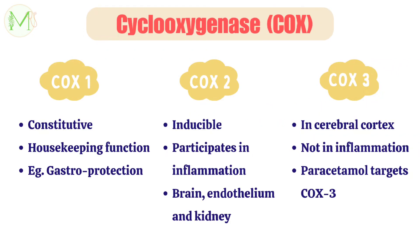The cyclooxygenase enzyme, abbreviated as COX, exists in three forms: COX-1, COX-2, and COX-3. COX-1 is a constitutive enzyme, produced all the time irrespective of the presence of substrate, and serves physiological housekeeping functions — for example, gastroprotection. COX-2, on the other hand, is an inducible enzyme, produced only in the presence of substrates like cytokines or other signaling molecules at the site of inflammation. However, COX-2 is present at some sites in the brain and in juxtaglomerular cells, where it may serve a physiological role.